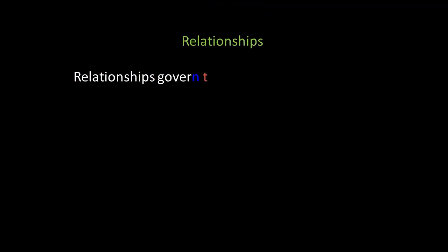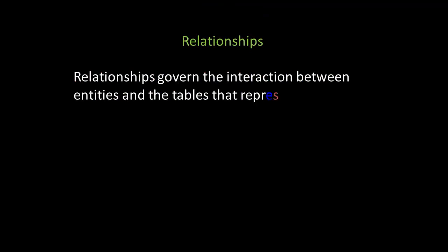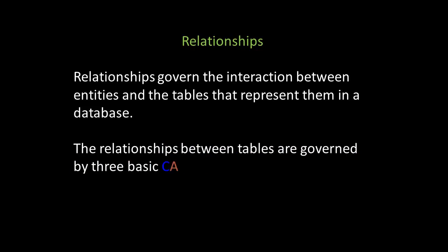The tables that represent the entities of a company or organization within a relational database have relationships. Relationships govern the interaction between entities and the tables that represent them in that database. The relationships between tables are governed by three basic cardinalities.